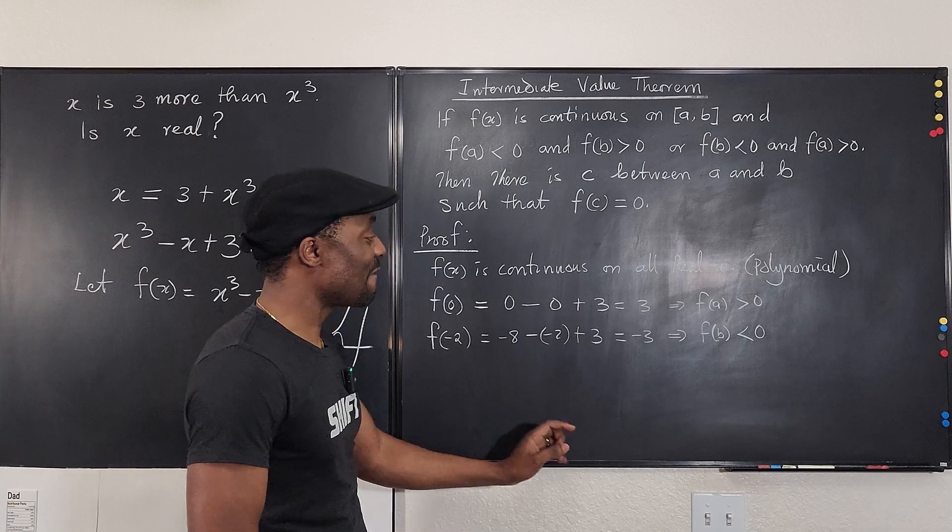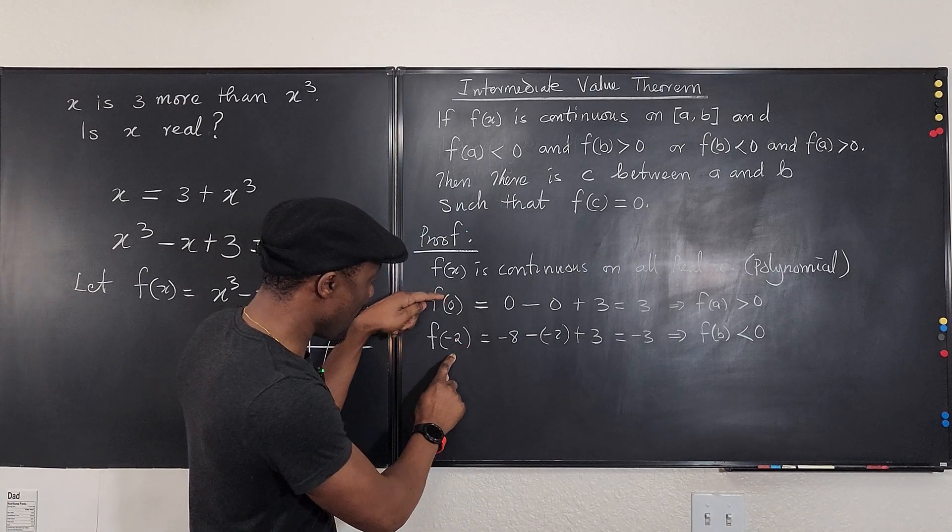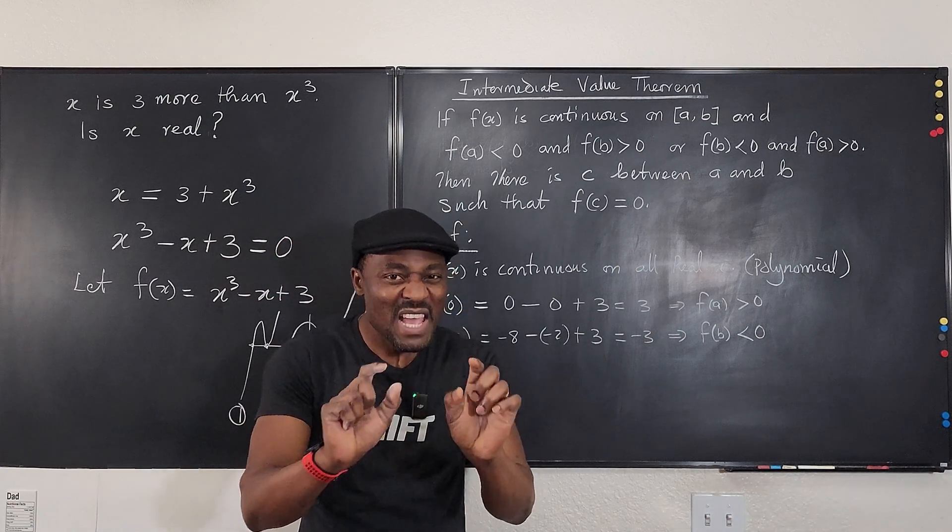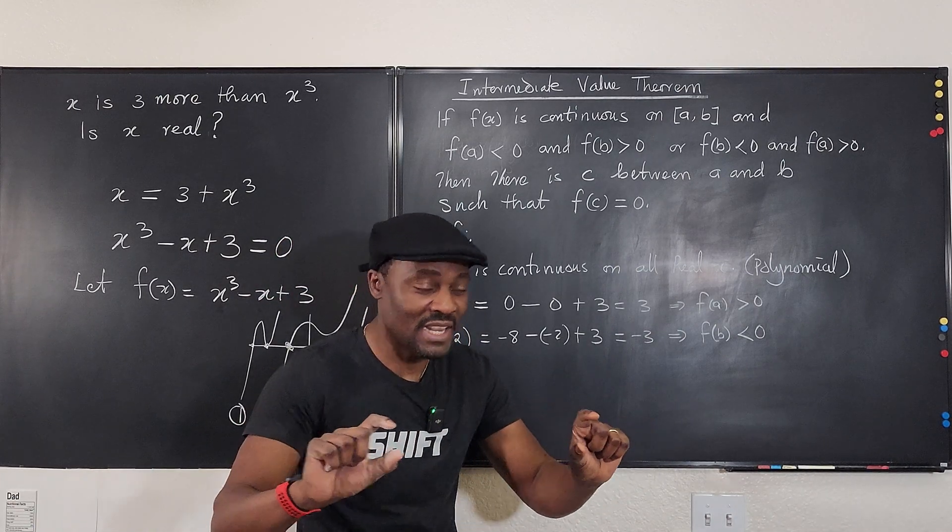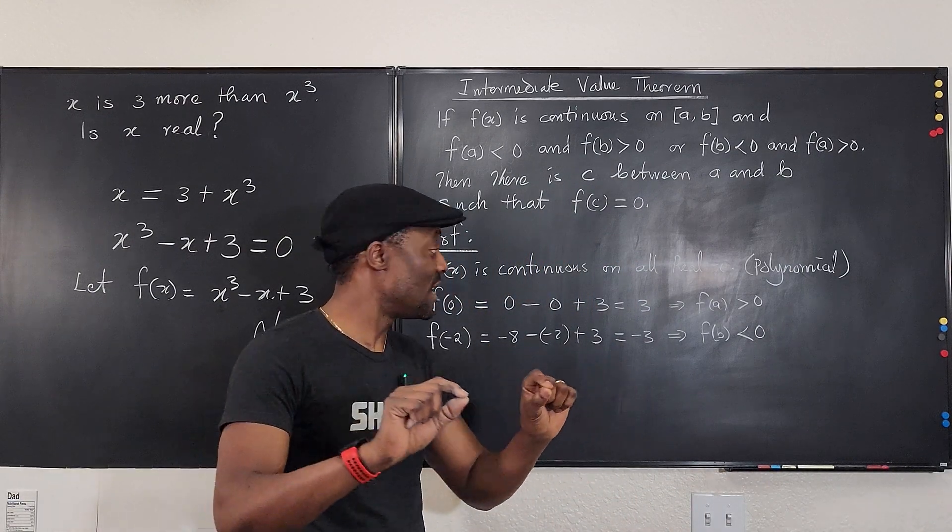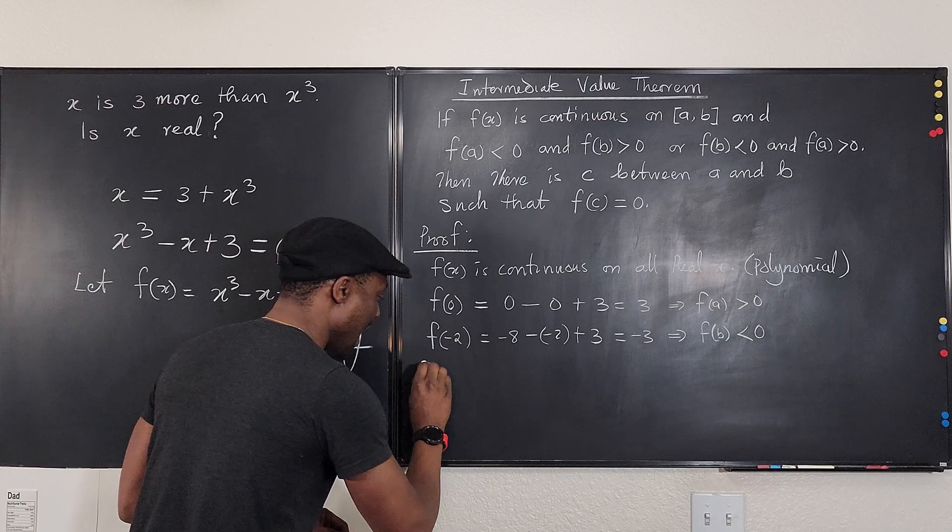Because all you have to say is that between zero and negative two, between negative two and zero, there must be a value on the number line where this graph will cross the x-axis. That is where the function is going to be equal to zero.